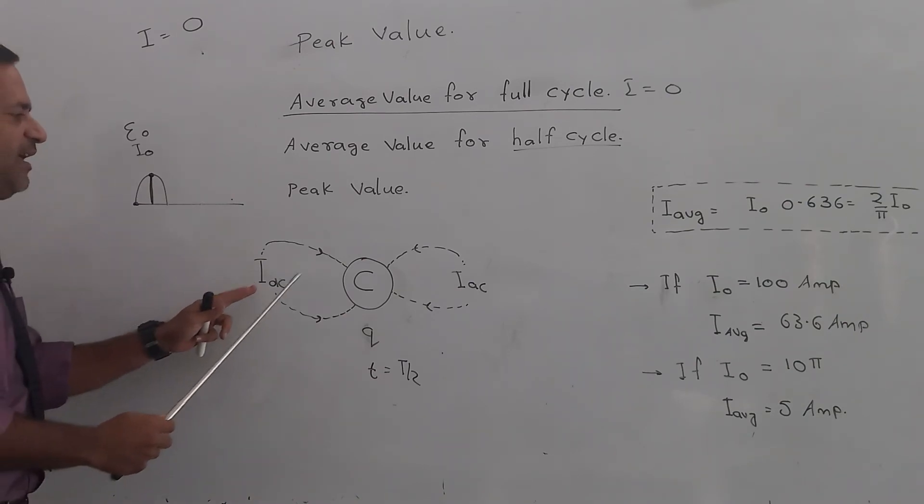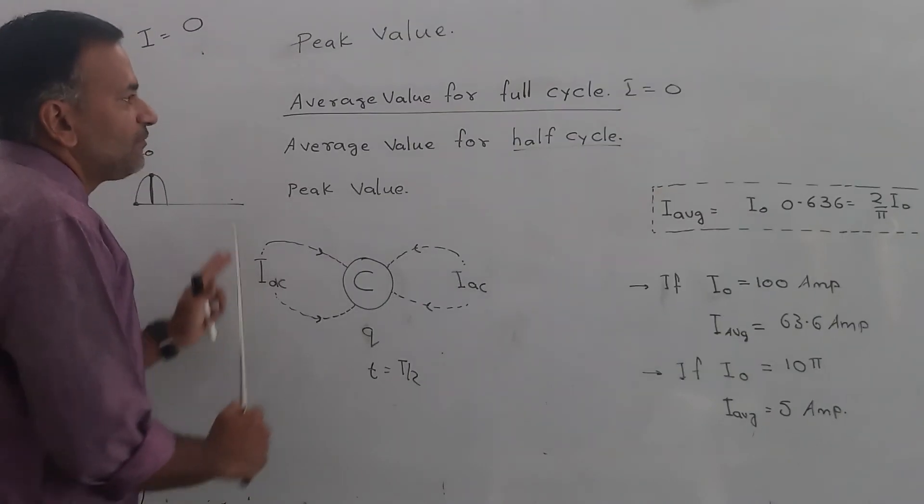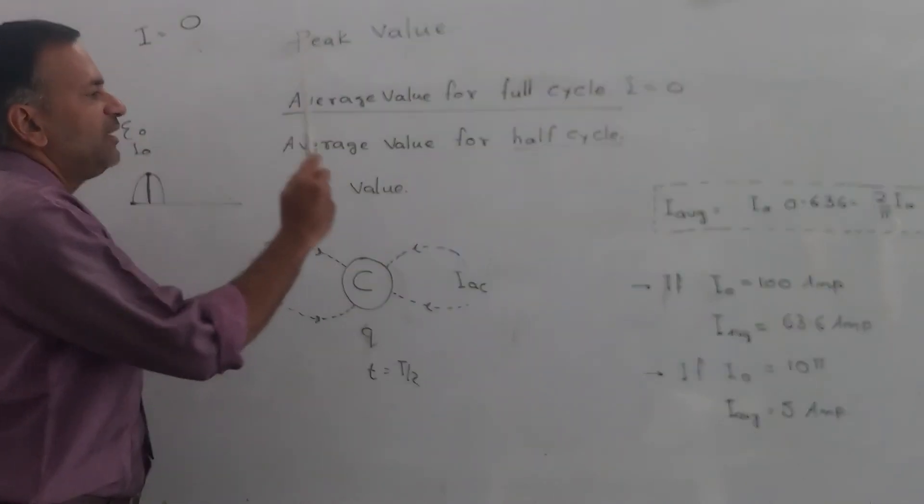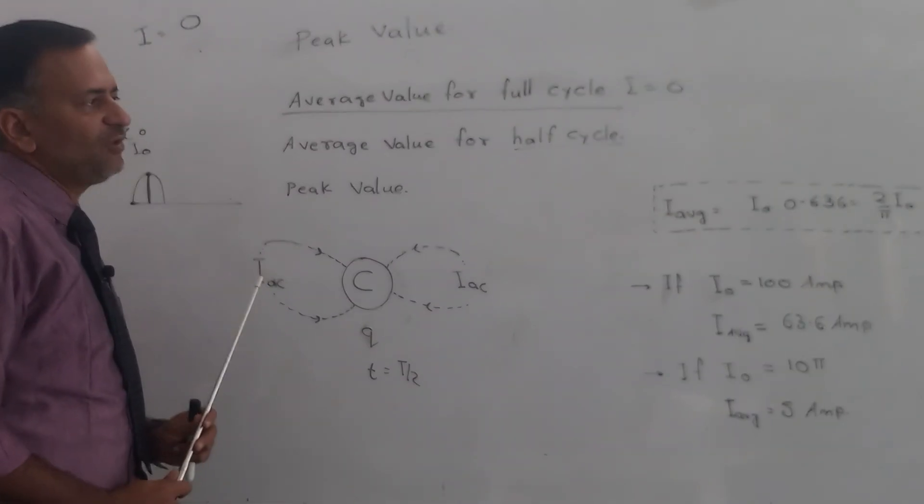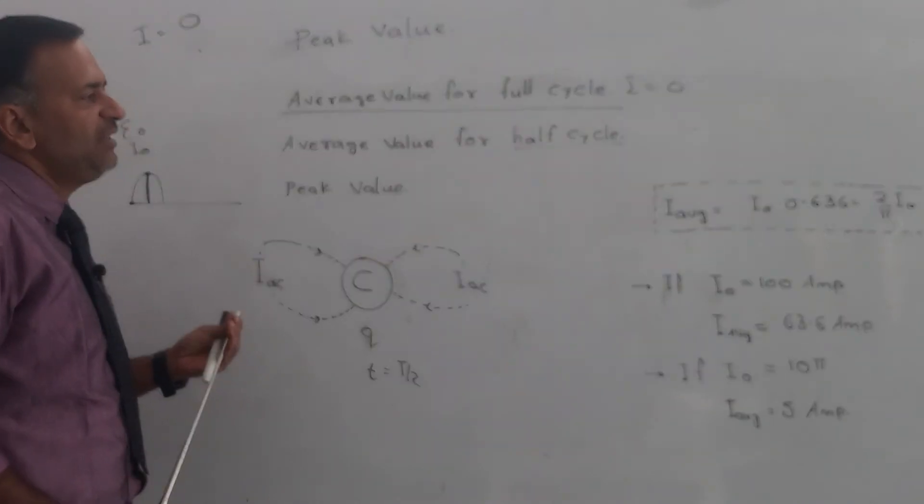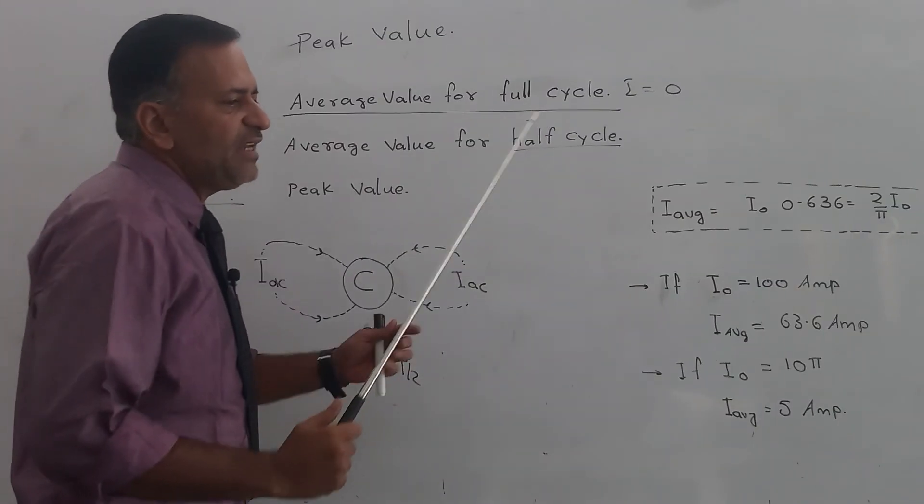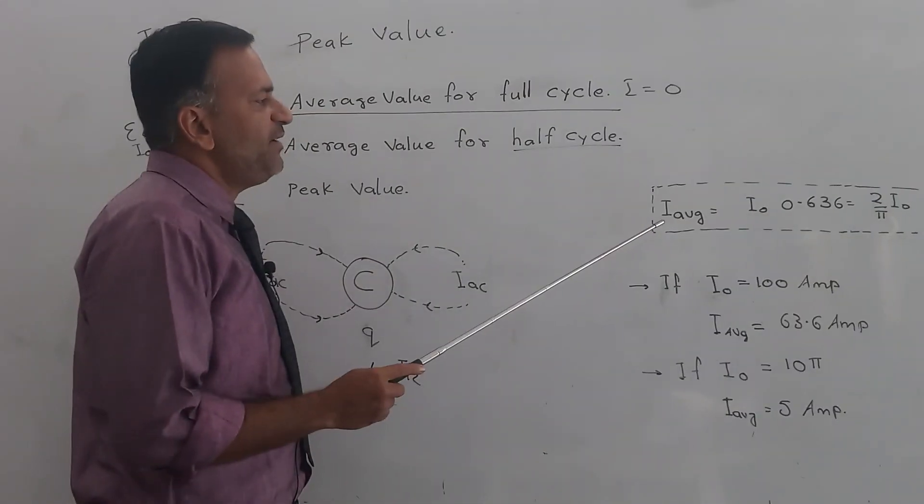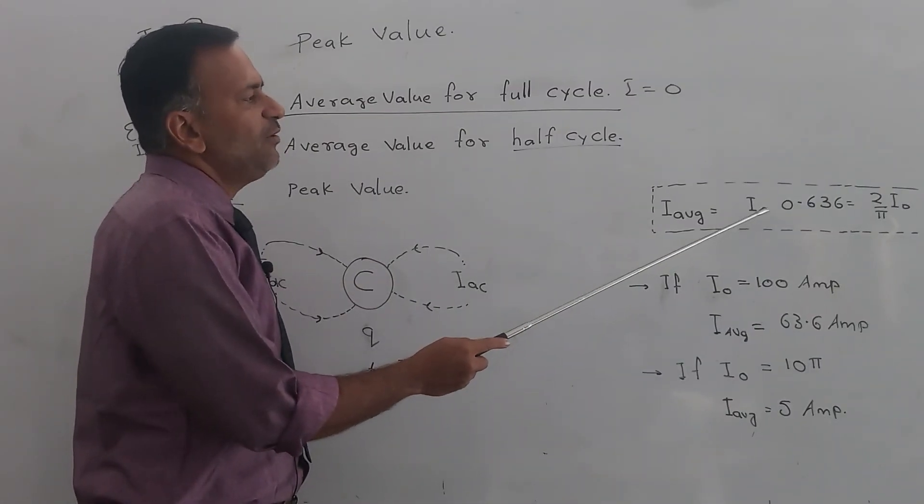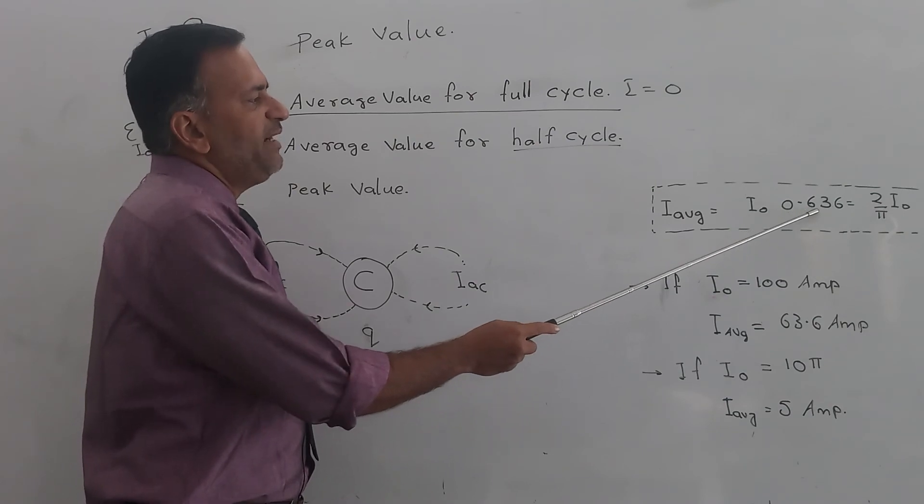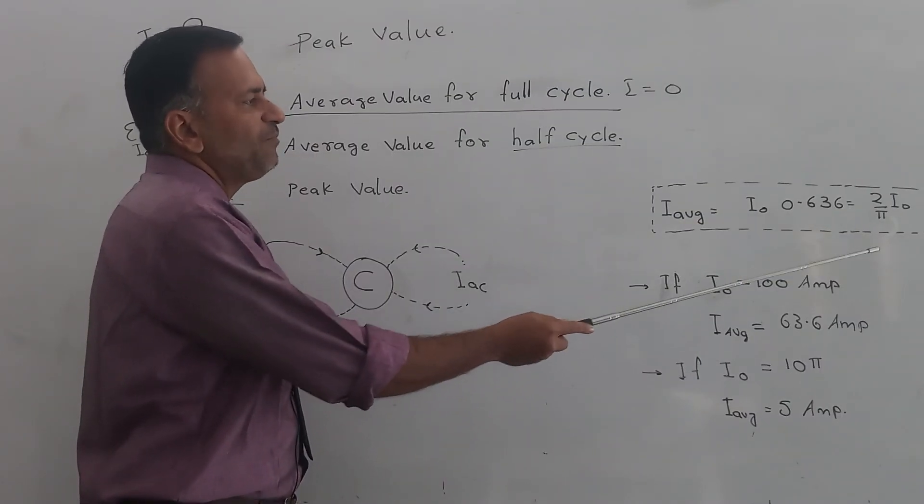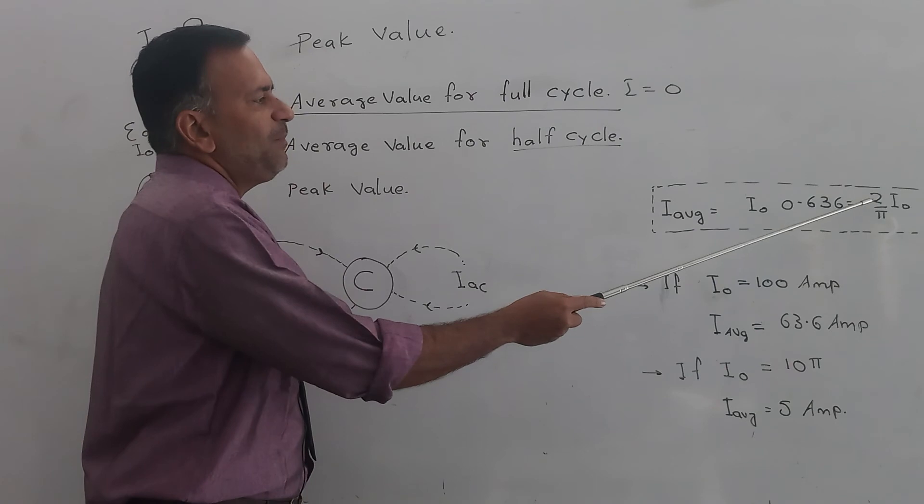Now, this average value of AC and its peak value have a mathematical relation. You do not have to derive it, but you have to just learn the final result: average value of AC equals peak value multiplied by 0.636, or it is the peak value multiplied by 2 upon π.